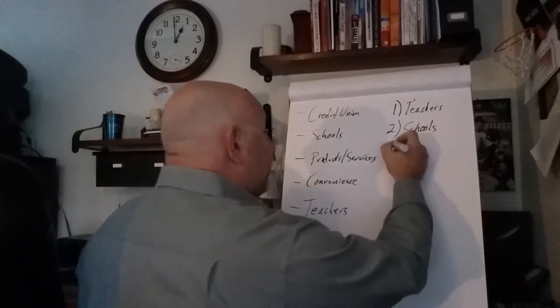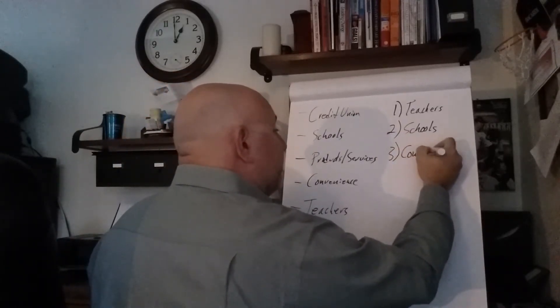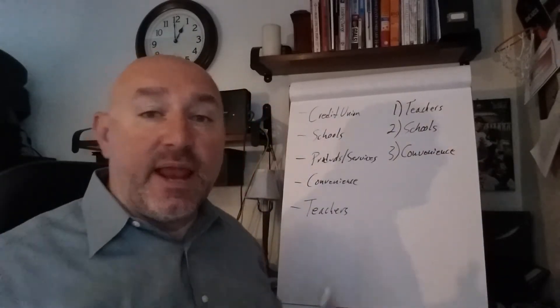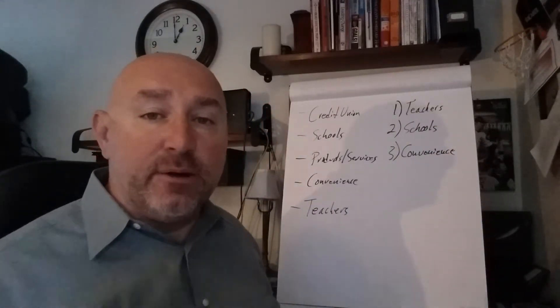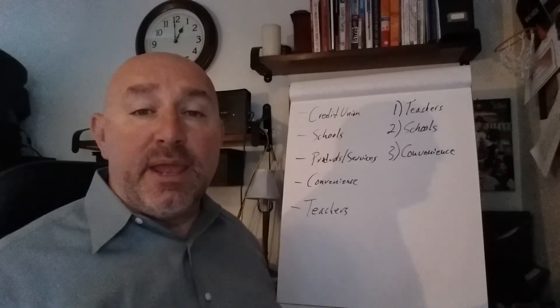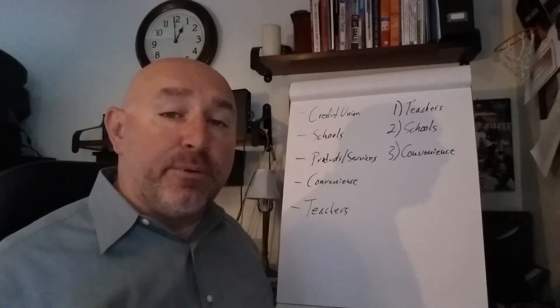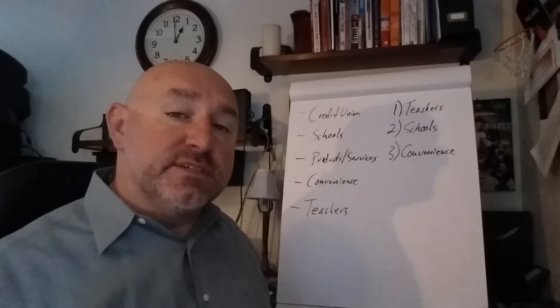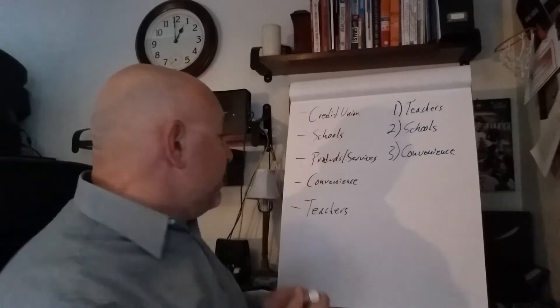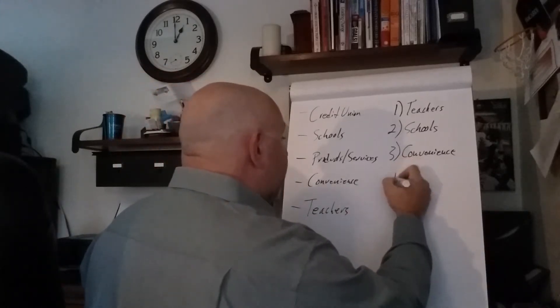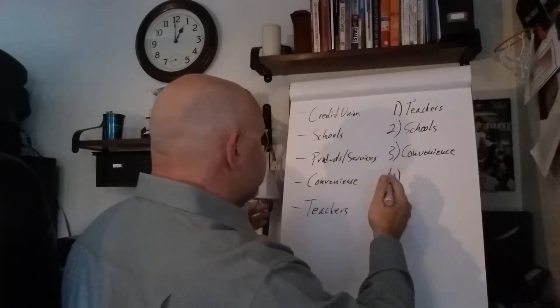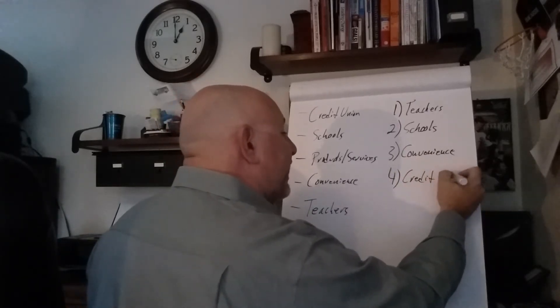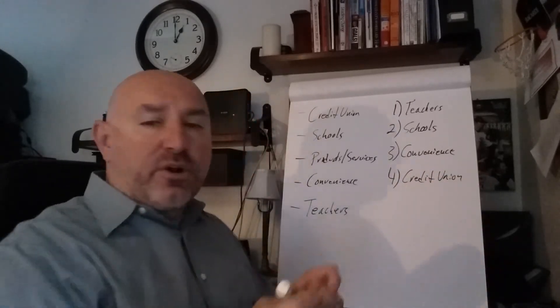The next one might be that convenience. It may be that, hey, we're part of co-op and we've got thousands of ATMs. It may be that we actually have a couple of satellite branches and a couple of school district offices or something of that nature. And number four, maybe products or services. But maybe number four or number five is the fact that you're a credit union.